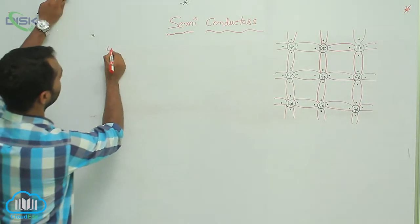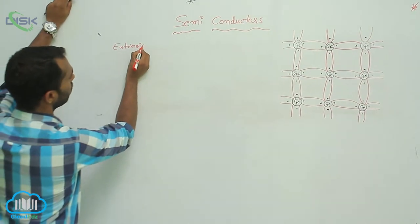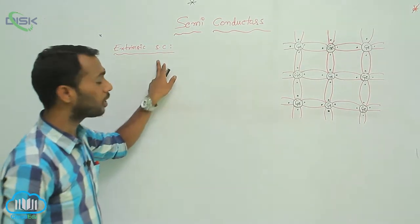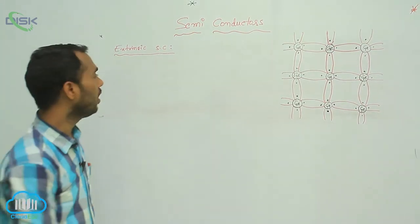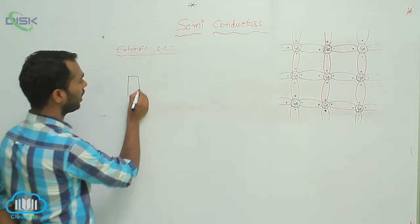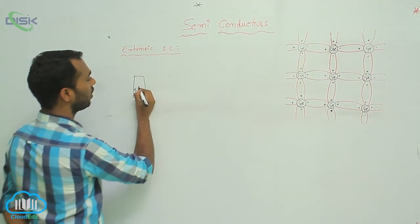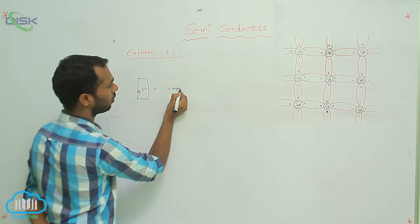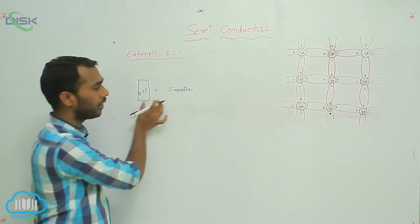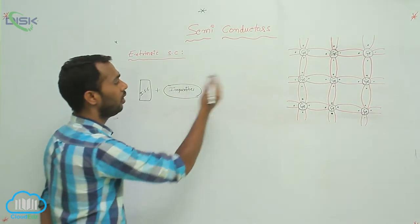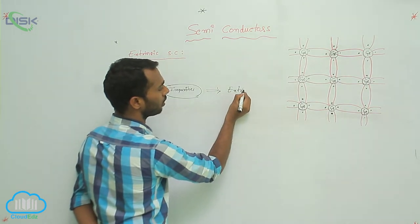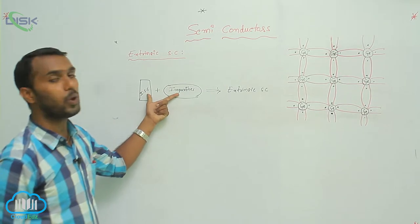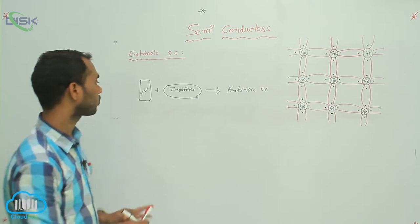Extrinsic semiconductor — intrinsic means pure form, extrinsic means impure form. You take an intrinsic semiconductor, which is a pure form of semiconductor, and add some impurities to it. That results in what is called an extrinsic semiconductor. So an extrinsic semiconductor is simply the impure form of a semiconductor.